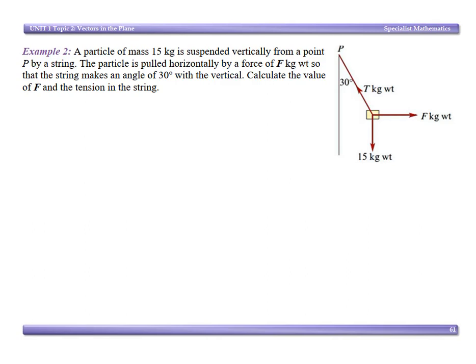Let's look at another example. A particle of mass 15 kilograms is suspended vertically from a point P by a string. The particle is pulled horizontally by a force F kilogram weight so that the string makes an angle of 30 degrees with the vertical. Calculate the value of F and also the tension in the string.